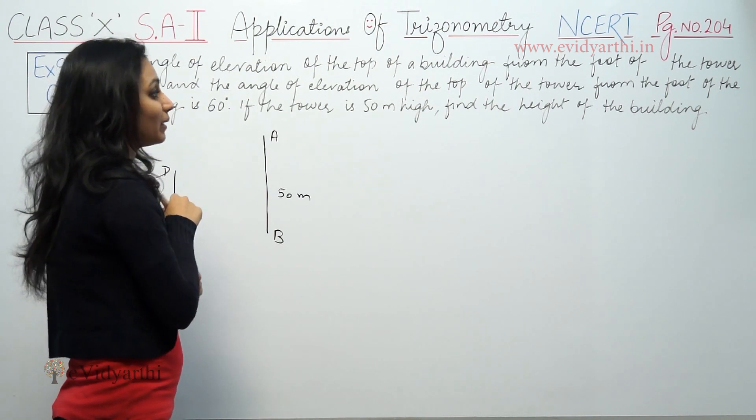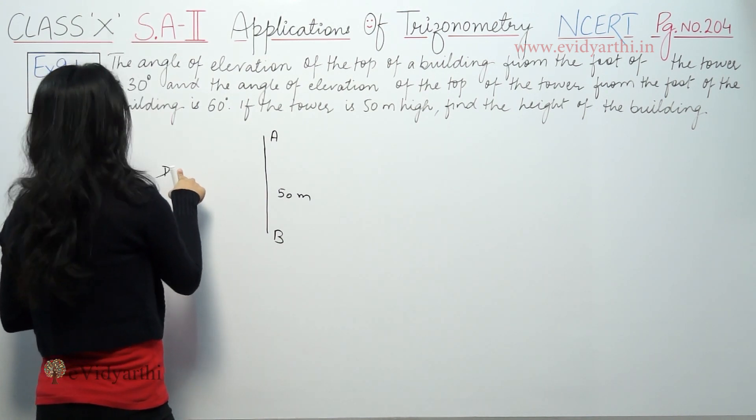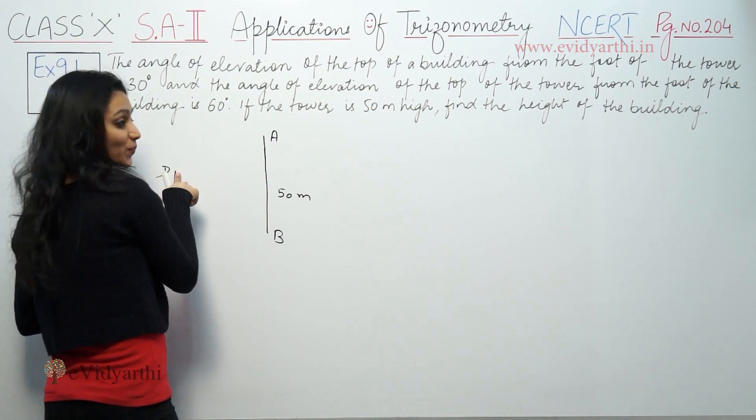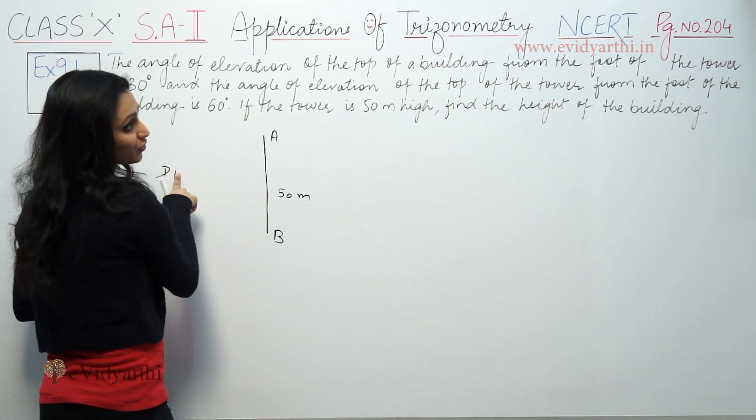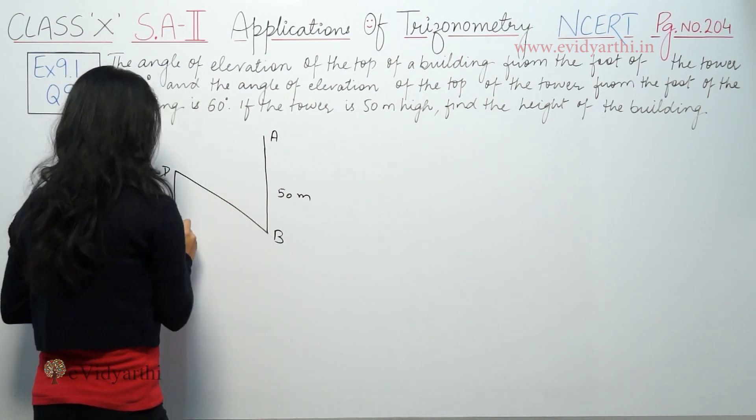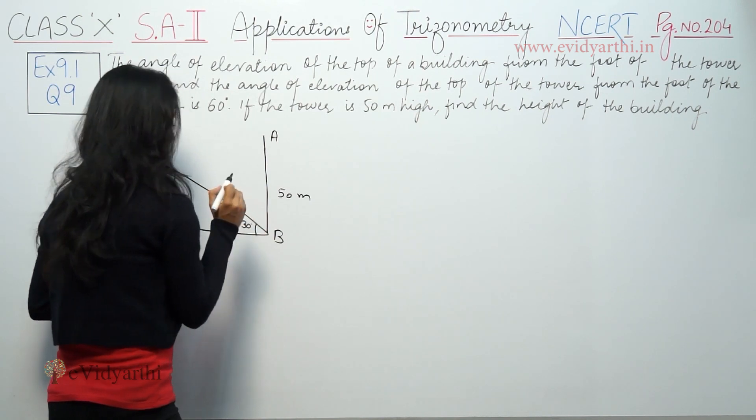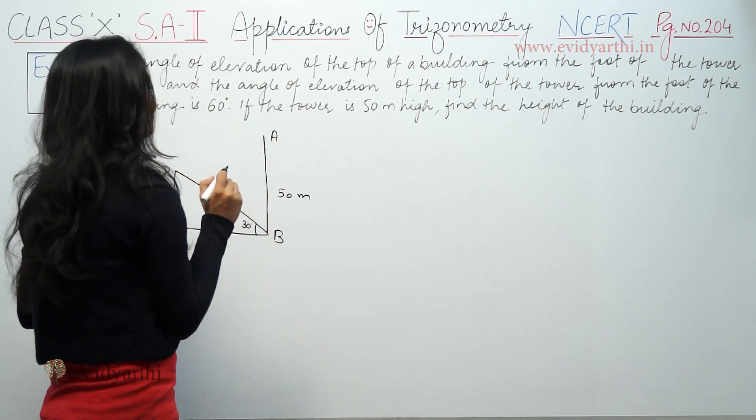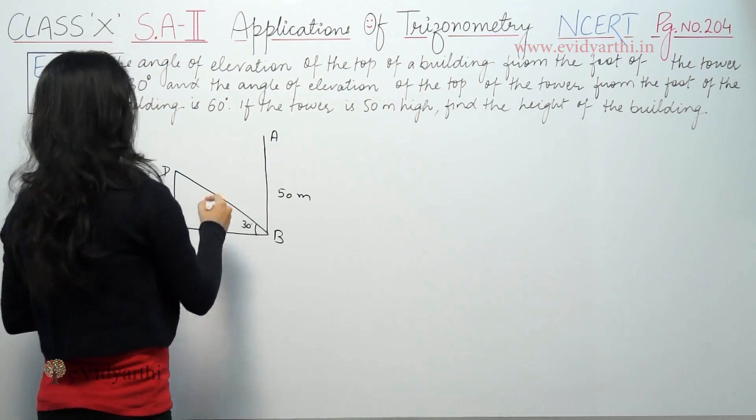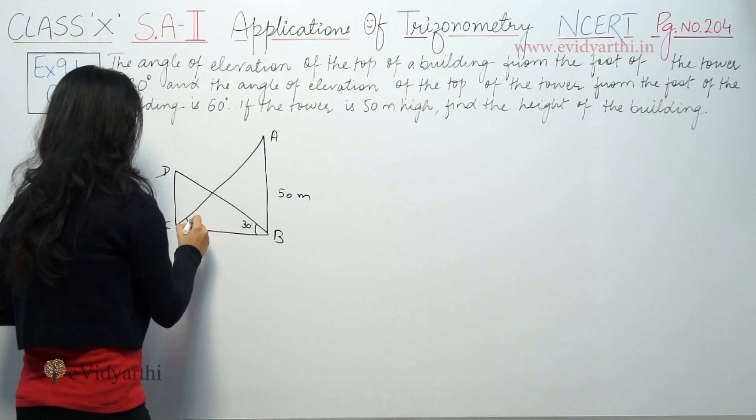Angle of elevation of the top of the building from the foot of the tower is 30 degrees. And the angle of elevation of the top of the tower from the foot of the building is 60 degrees.